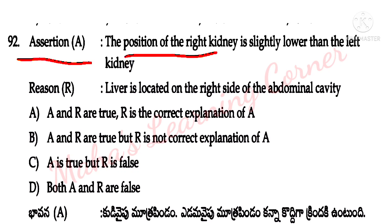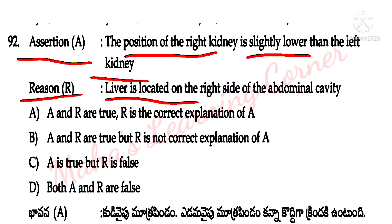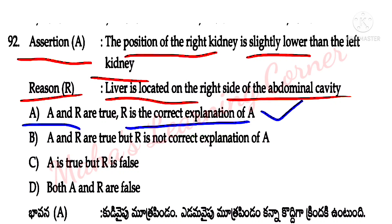Assertion A: The position of the right kidney is slightly lower than the left kidney. Reason R: The liver is located on the right side of the abdominal cavity. Both A and R are true and R is the correct explanation of A. Option A is the correct answer.